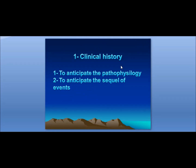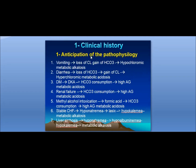Study of the clinical history is important for two things: first, to anticipate the pathophysiology, and second, to anticipate the sequence of events. For example, if the patient is vomiting, they will lose chloride and gain bicarbonate, developing hypochloremic metabolic alkalosis.